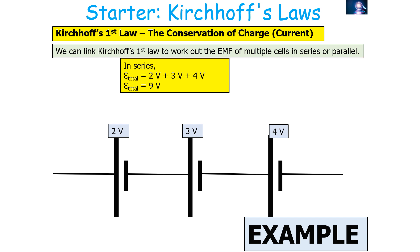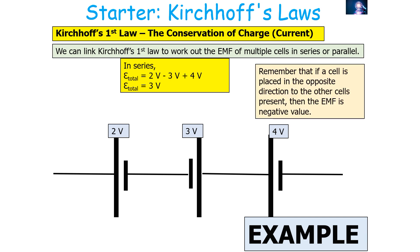You must be mindful of the orientation and arrangement of these cells. If a cell is in the opposite configuration to the other cells, that EMF becomes a negative number. In this configuration you'll notice the middle cell of 3 volts is in the opposite direction, so the total EMF is 2 volts minus 3 volts plus 4 volts, which equals 3 volts. If a cell is placed in the opposite direction to the others, its EMF is a negative value.